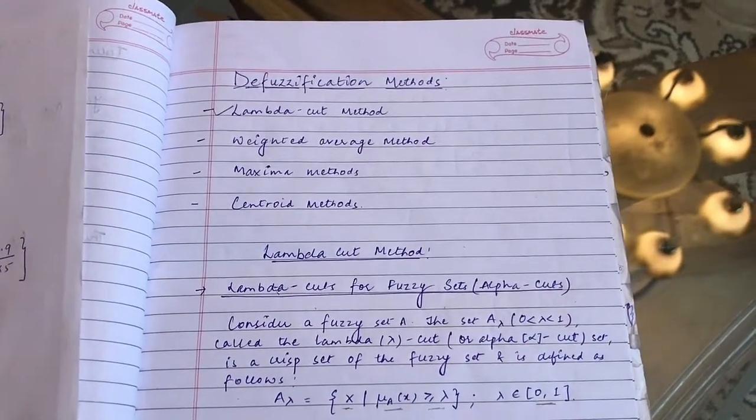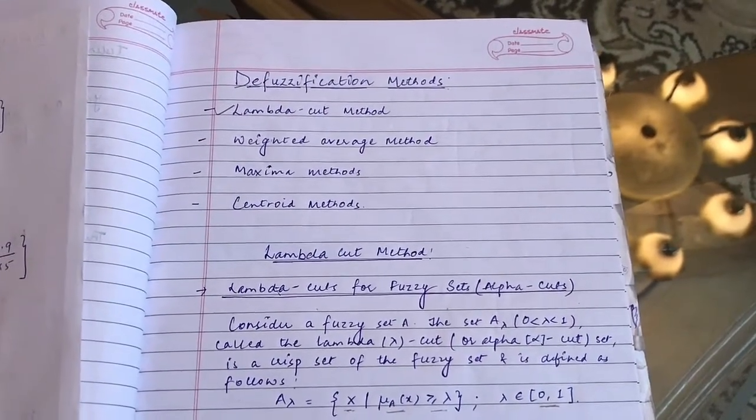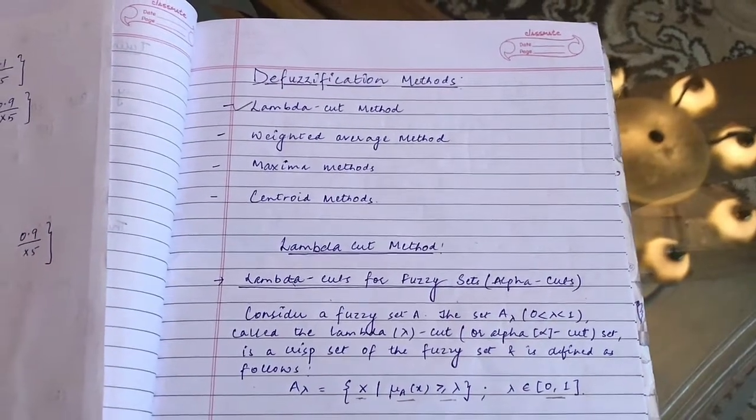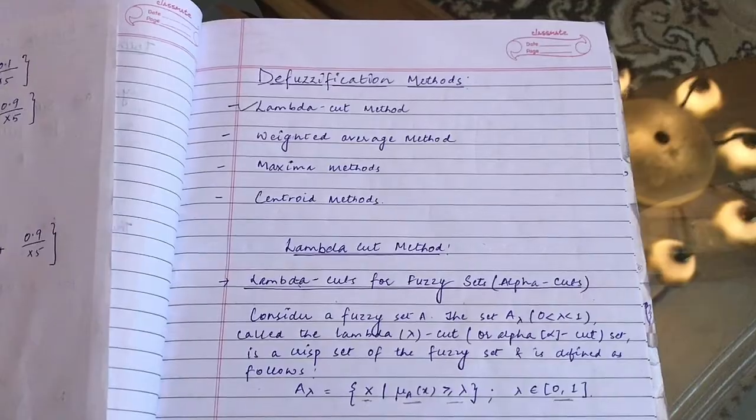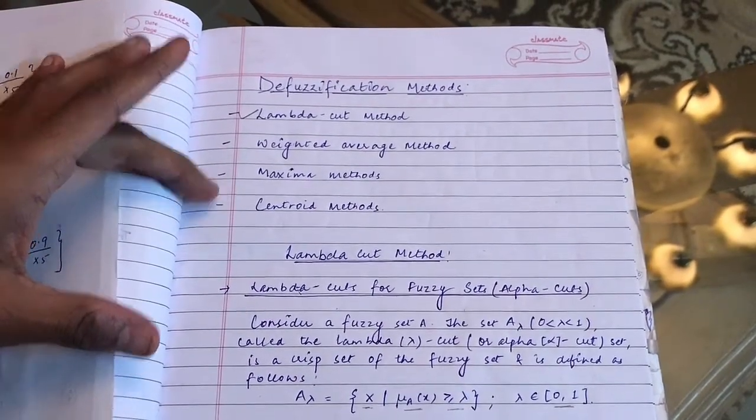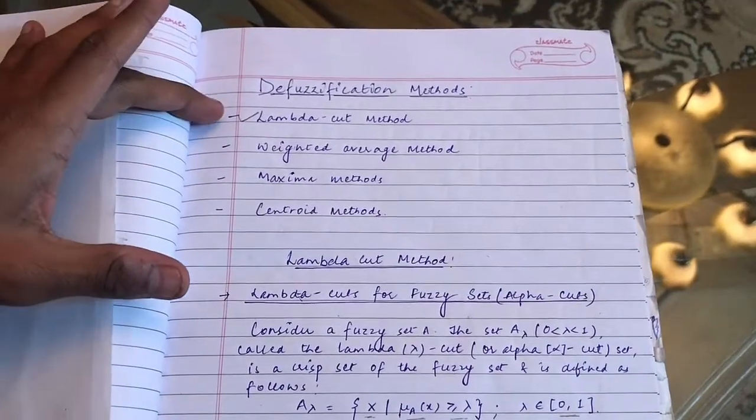Hello friends, in this video I will be talking about one of the methods of defuzzification. Defuzzification is the process of converting a fuzzy set into a crisp set. We have a number of methods for doing this: lambda cut method, weighted average method, maxima method, and centroid method. But in this video I will be talking only about lambda cut method.